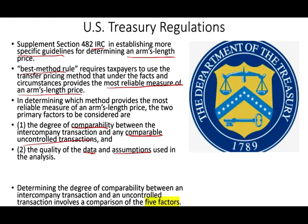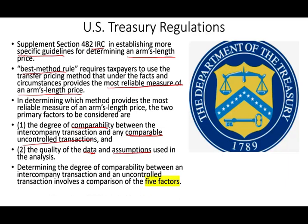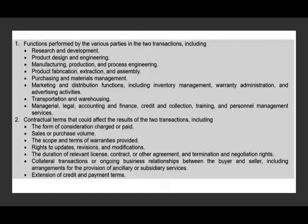When determining the degree of comparability and the quality of data — whether for an intercompany or an uncontrolled transaction — you can look at five factors in determining the price. These factors require substantial judgment and each situation is different.